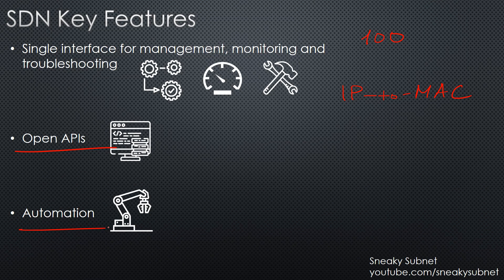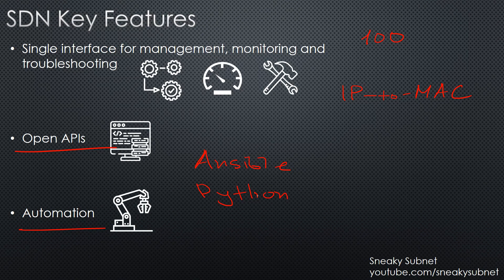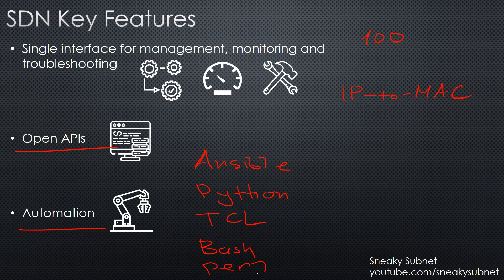The final bullet here is automation. This one is closely related to CLI. There are a lot of different tools for automating CLI-based systems like Ansible, Python scripts, TCL, Bash, Perl, etc. But they all suffer from the same drawback: CLI is good for humans, not for machines. SDN solutions are built with automation in mind, and the capabilities they provide are much easier, more stable and safer.